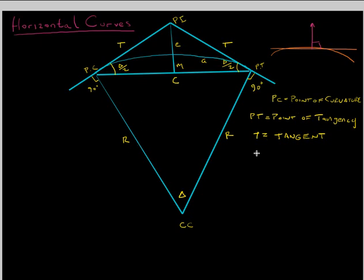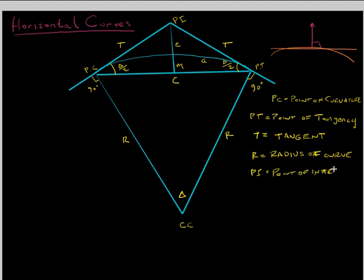R is equal to the radius of the curve. PI is the point of intersection. CC is the curve center.